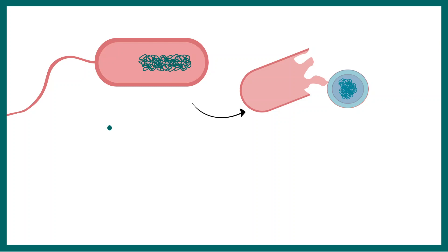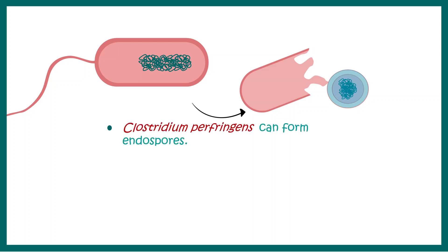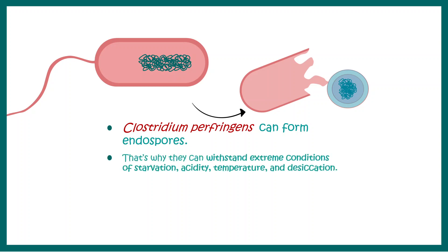One important feature about Clostridium perfringens is that it can produce endospores. Endospores are really resistant to extreme environmental conditions and they can thrive in any situation. That means they are resistant to starvation, acidity, temperature, or even desiccation. This makes them pretty much untreatable because they are resistant to many antibiotics.